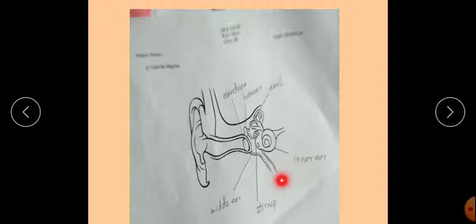And this is stirrup. And this one is middle ear. You have to label the diagram. That is on page number 7 in your Science Factor book.